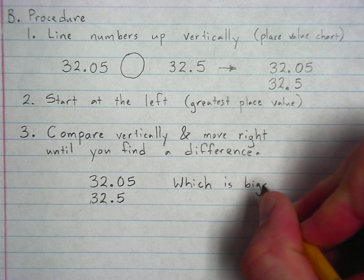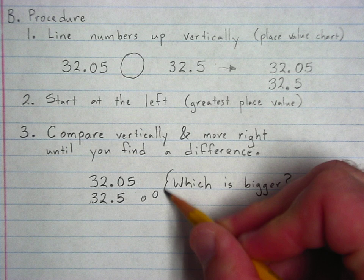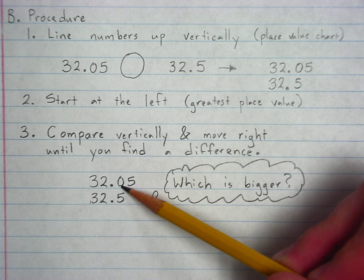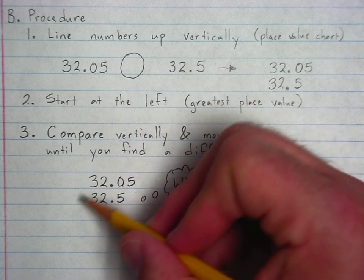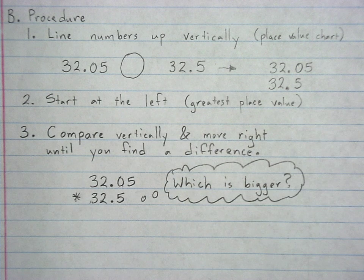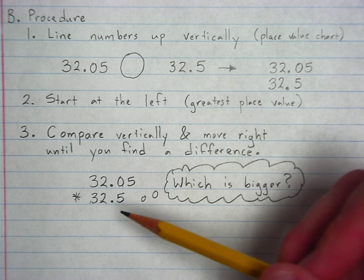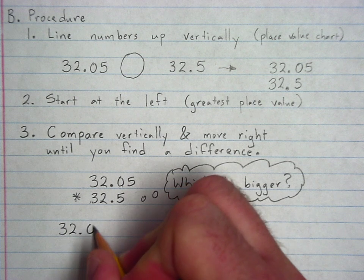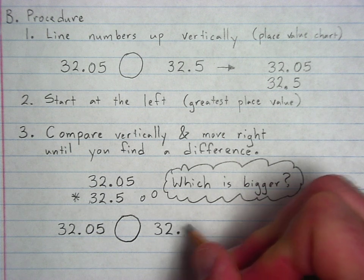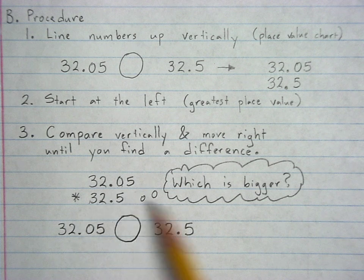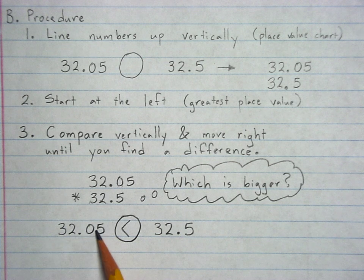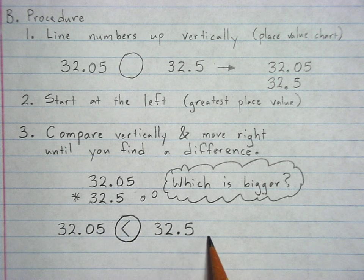So now I'm going to ask myself, which is bigger? I'm looking at this, and I'm asking myself what many of you are probably thinking right now is a super easy question. Which is bigger? Zero or five? Well, that would be five. Five is going to be greater than zero. Five tenths is more than zero tenths. So, this is the larger number. Thirty-two and five hundredths is less than thirty-two and five tenths.